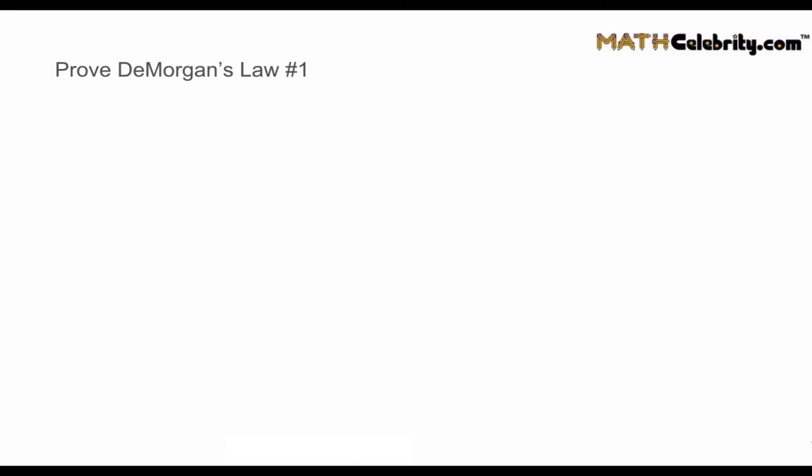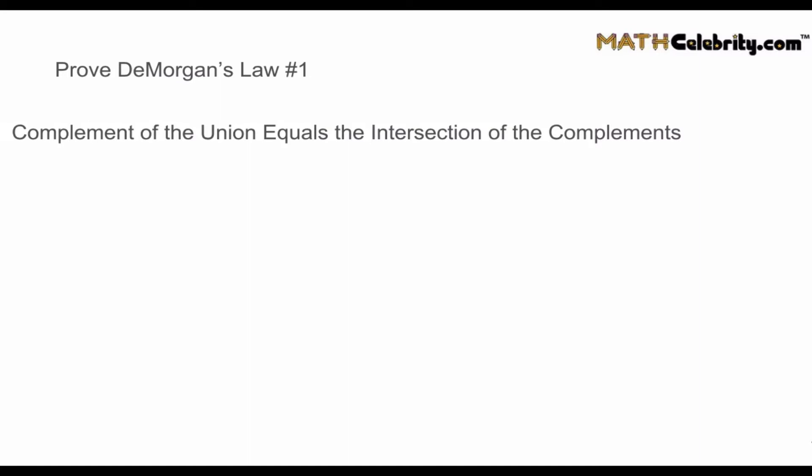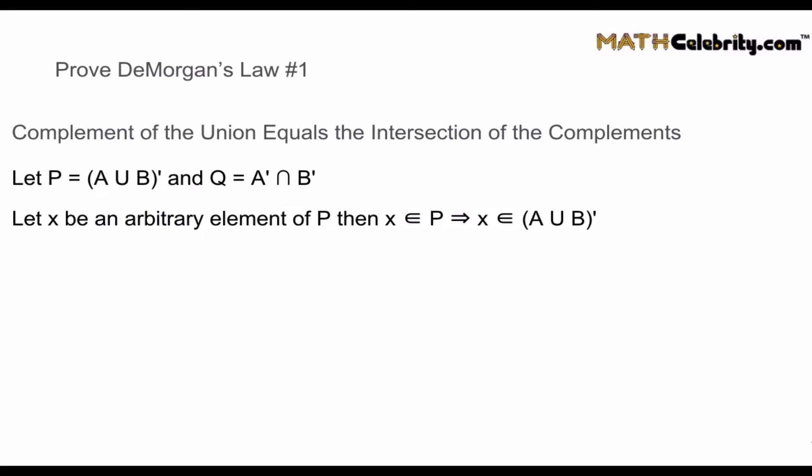Let's prove DeMorgan's Law number one: the complement of the union equals the intersection of the complements. Let P equal (A union B) complement, and let Q equal A complement intersection B complement. Let X be an arbitrary element of P — meaning X is an element of (A union B) complement. That means X cannot be an element of A union B. Because of that, X cannot be an element of A and it cannot be an element of B, since if X were in the union, it would have to be in A or B.